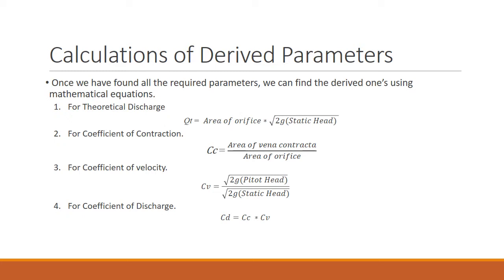For the coefficient of velocity, we simply divide the square root of two times the gravitational acceleration times the Pitot head, divided by the square root of two times the gravitational acceleration times the static head. Finally, for the coefficient of discharge, we multiply the coefficient of contraction and coefficient of velocity. This gives us all the required parameters as we defined in the first slide.